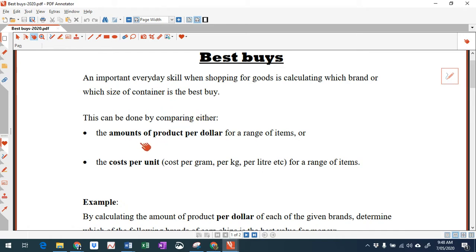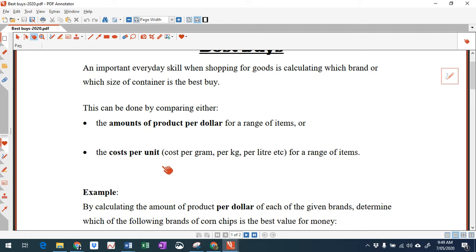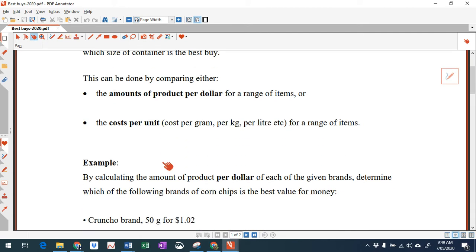Now how do you compare items? You can either compare the amount of products you're getting per dollar, or you can compare the cost per unit. So you might get the cost per gram or the cost per kilogram. Now this idea is also seen in the supermarkets, because you'll see what we call unit pricing on the price sticker. So next time you go to the supermarket, just have a look at the unit pricing they show you on the sticker, and you'll see an example of that in the next example.